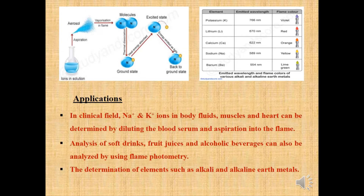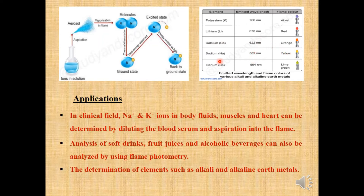We can see the emitted wavelengths and flame colors of various alkali and alkaline earth metals. Potassium emits at 766 nm and the flame color is violet. Lithium emits at 670 nm and the flame color is red. Calcium emits at 622 nm and the flame color is orange. Sodium emits at 589 nm and the flame color is yellow. Barium emits at 554 nm and the flame color is lime green.